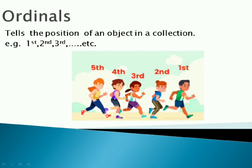So let's understand ordinal numbers. It tells the position of an object in a collection. For example, first, second, third. In this picture, you can see a running race is going on. The boy in a green shirt is at the first position. The girl in the blue shirt is at the second position, and so on.